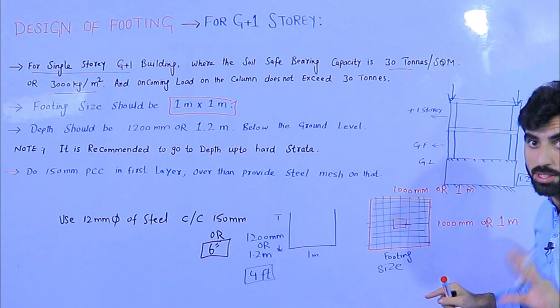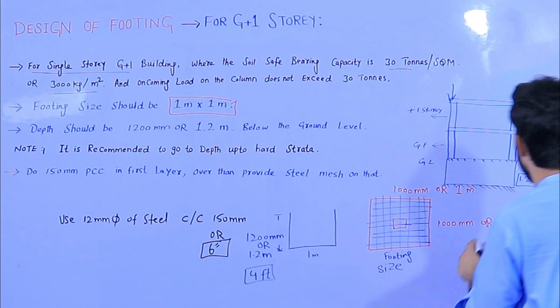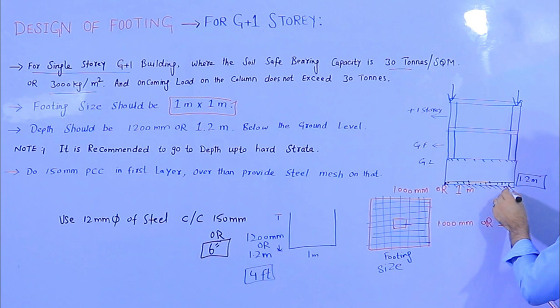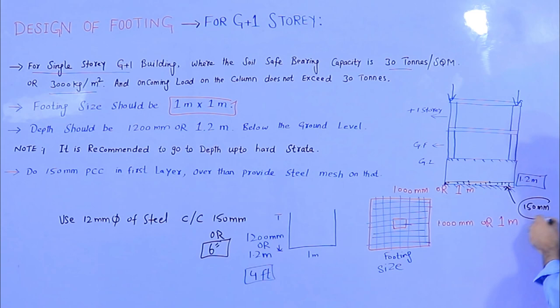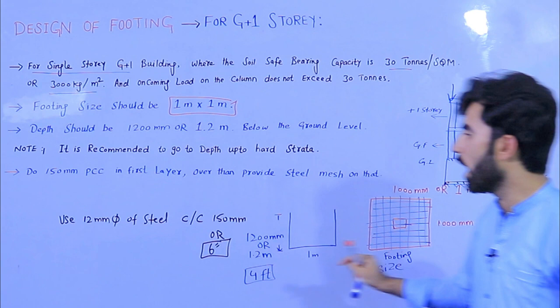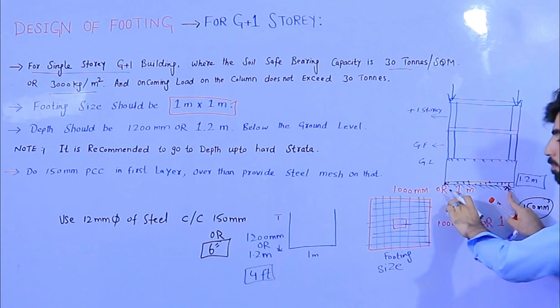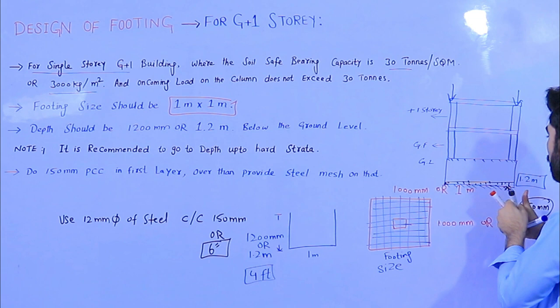Before providing steel reinforcement, plain cement concrete (PCC) should be used at the bottom with a depth of 150 millimeters. First provide the PCC layer, then provide the steel mesh on top of it — as you can see, this is the steel mesh.